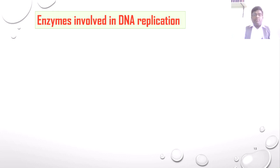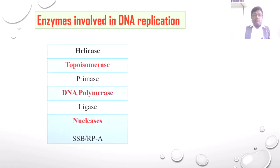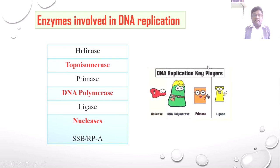Now we discuss the enzymes involved in DNA replication — the real heroes of the process. These include helicase, topoisomerase, primase, RNA polymerase, ligase, nucleases, single-stranded binding proteins, RPA, and RPA-C. These proteins play important roles in DNA replication. We will see what different functions each carries out.